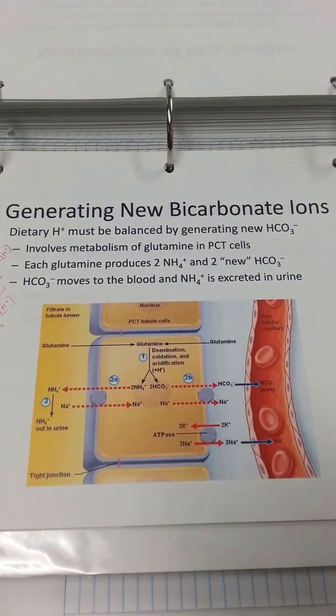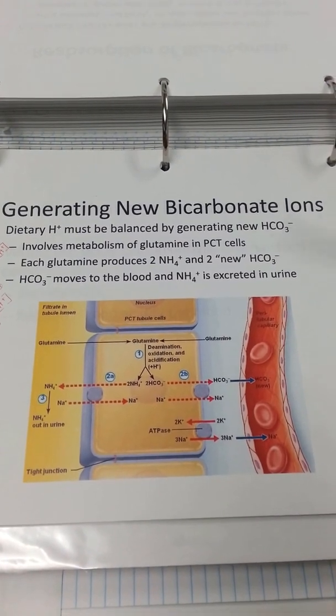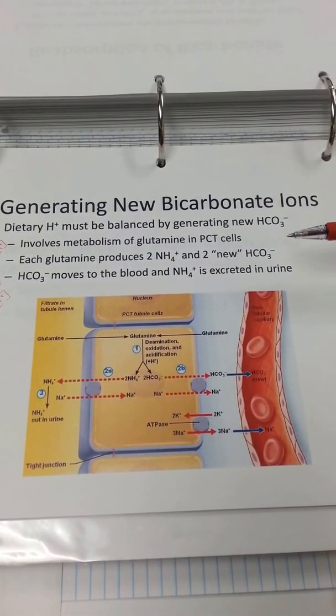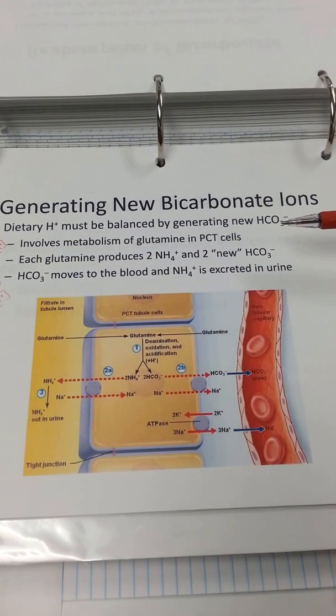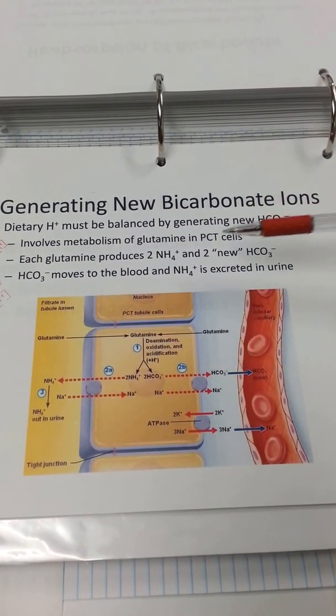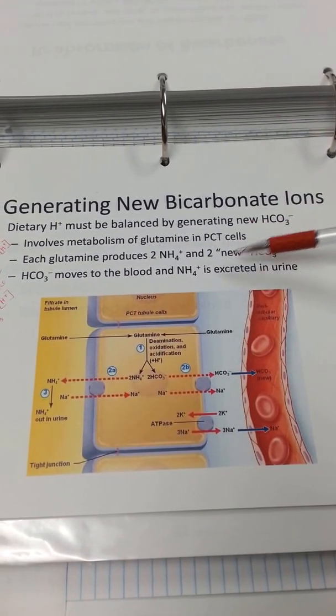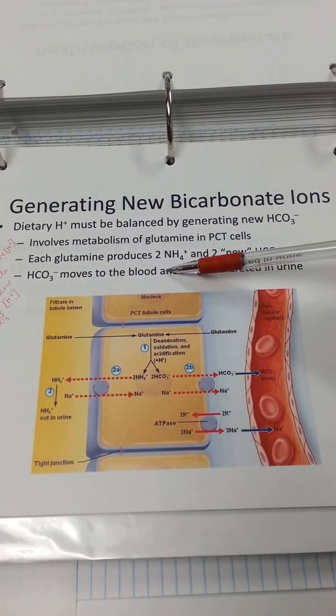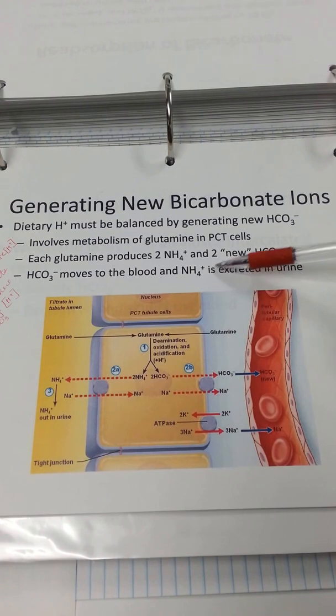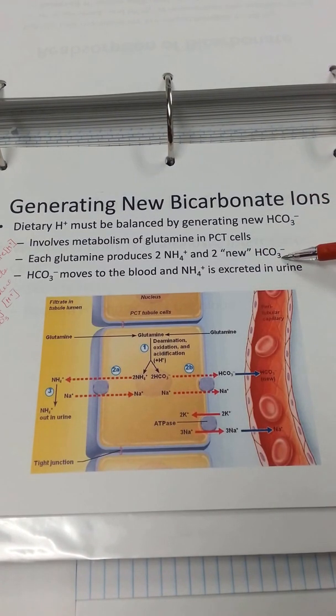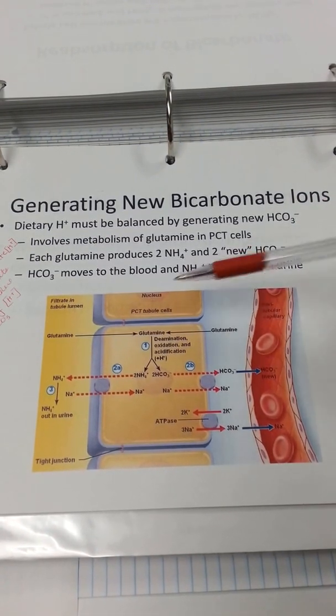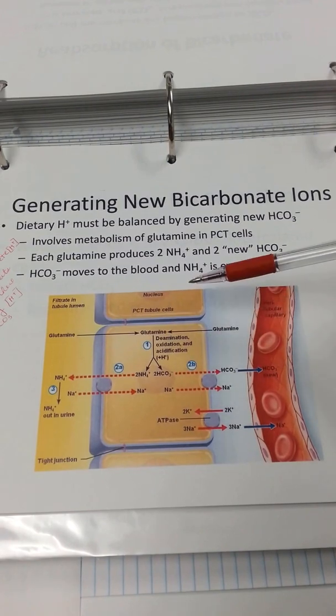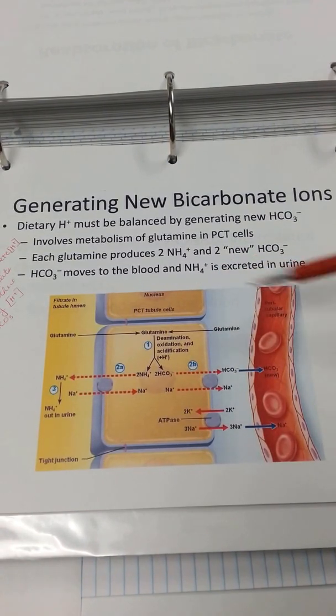Generating new bicarbonate ions. Dietary hydrogen must be balanced by generating new bicarbonate. Involves metabolism of glutamine in PCT cells. Each glutamine produces two NH4 and two new bicarbonate. Bicarbonate moves to the blood and NH4 is secreted into the urine.